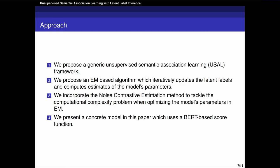So in this paper, we propose a generic unsupervised semantic association learning framework, we call USAR. We exploit source sentences and the labels of predicted target sentences in an EM algorithm. The EM algorithm iteratively updates the latent labels and computes the source score function parameters. To tackle the computational complexity problem, we incorporate noise contrastive estimation method in M-step. Specifically, we present a concrete model in this paper which uses a BERT-based score function and test our model's performance on three tasks.